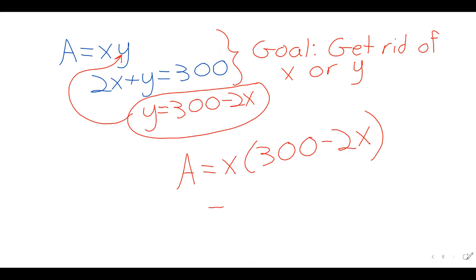To find the critical values, we need to take the derivative. We could blunder in with the product rule - we've got something times something else. But probably the easiest way to approach this is by distributing. That's 300X minus 2X squared. And A prime, then, is 300 minus 4X.